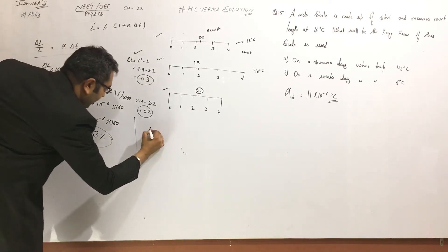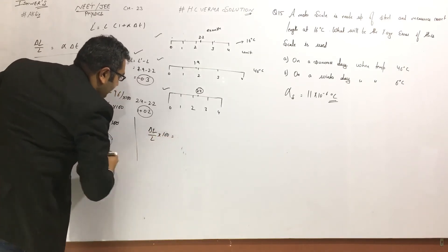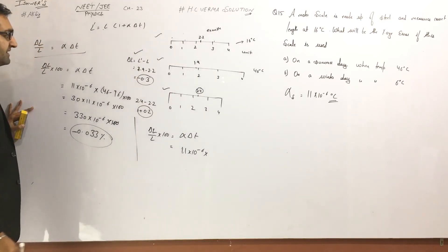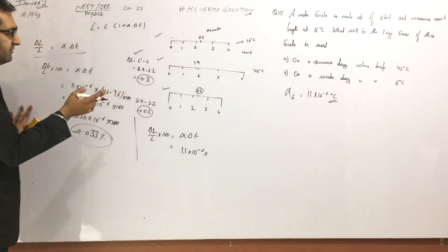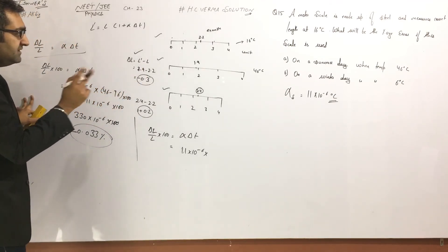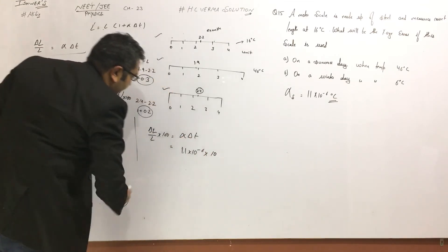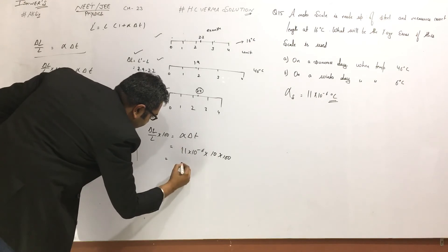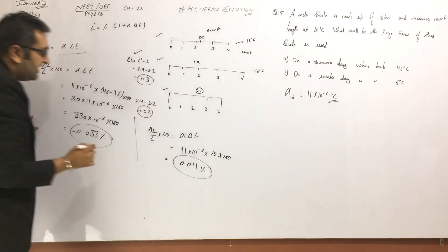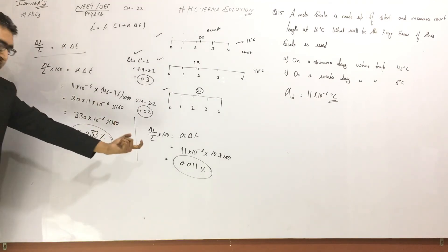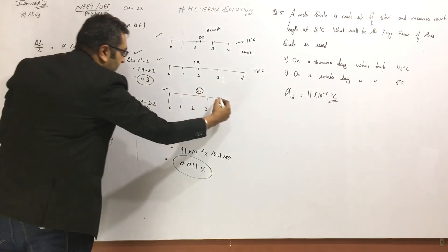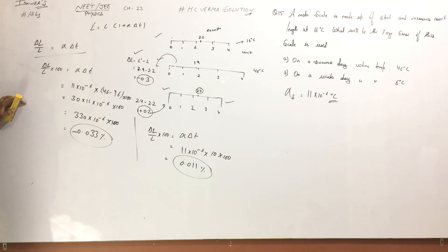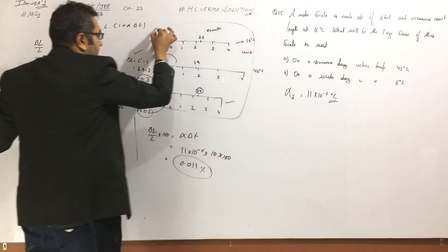Now, delta L by L multiplied by 100 is equal to alpha times delta T. Alpha is the same — 11 into 10 to the power minus 6. Delta T for the winter day is 16 minus 6, which is 10. So this gives 0.011. Since it is contraction, the error is positive. This is the concept and the question is clear.